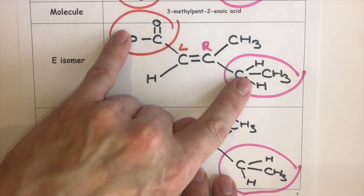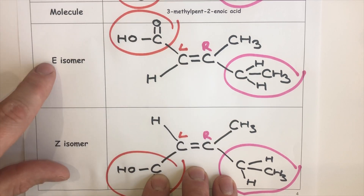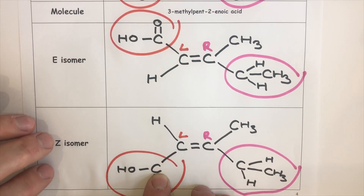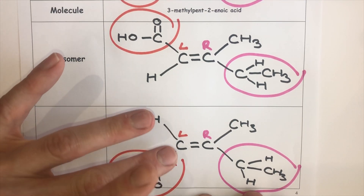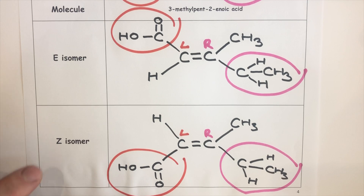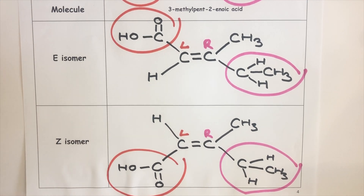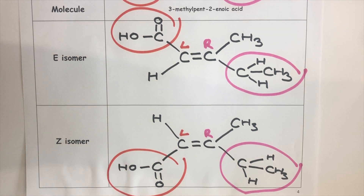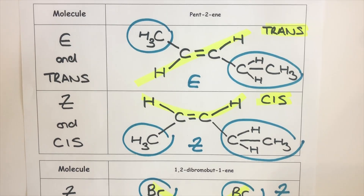You can think of E as like the groups being enemies — they are on opposite sides. Flipping over gives the two high priority groups on the same side — the Z isomer. You could say they are on the same side as each other. Now we've got our heads around EZ isomers, let's look at cis-trans.